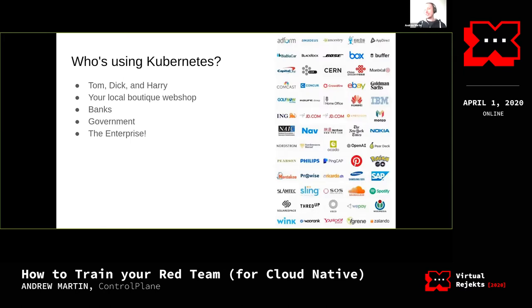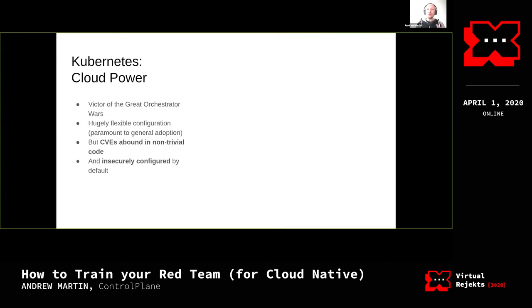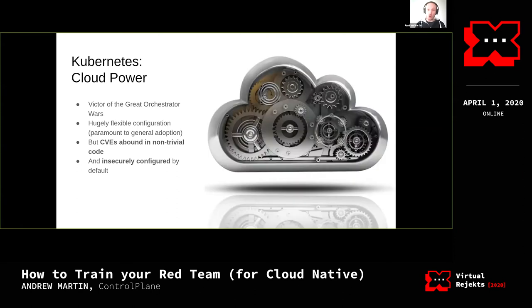Who isn't using Kubernetes in 2020? Kubernetes has won the orchestrator wars by virtue of being all things to all men. But all of these companies have endured the same struggle to secure that orchestrator in the same way. There are two fundamental barriers to deploying Kubernetes from a security perspective. CVEs abound in non-trivial code. As we would expect in any project of this size and velocity, security is difficult and CVEs are a fact of life. And secondly, Kubernetes is historically insecure by default. We will dig into that later.